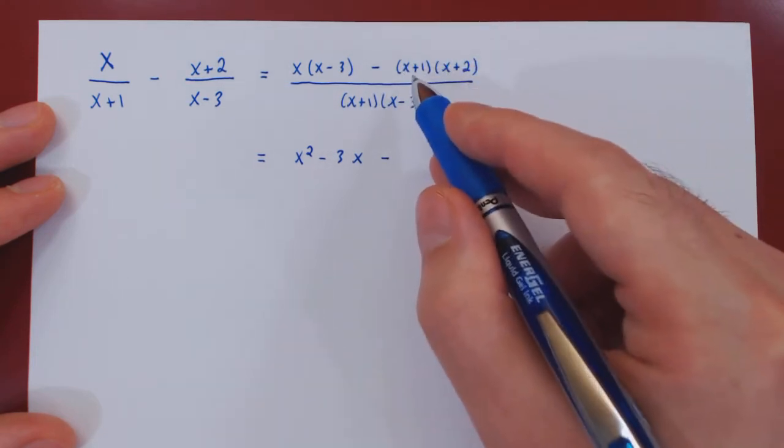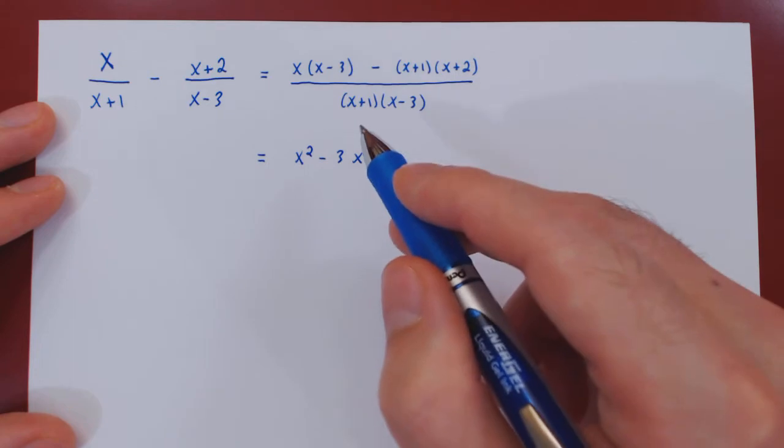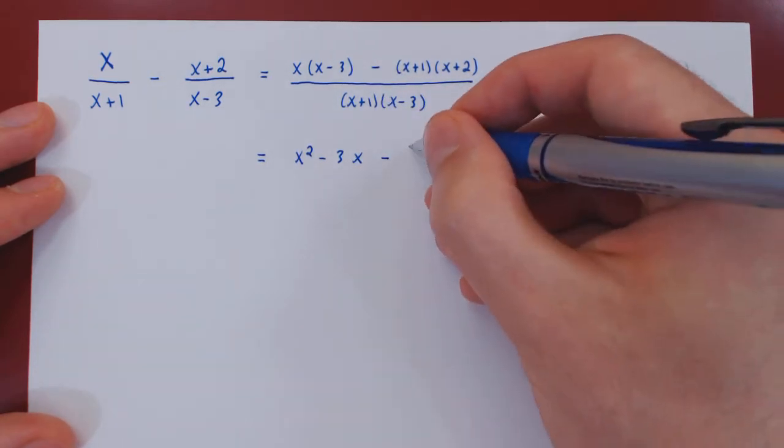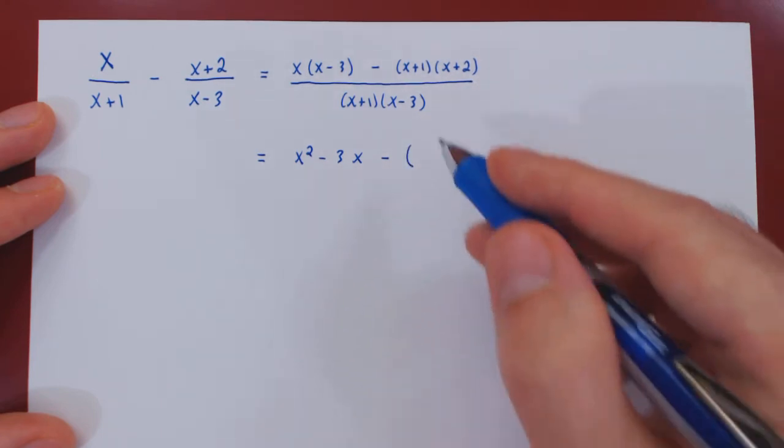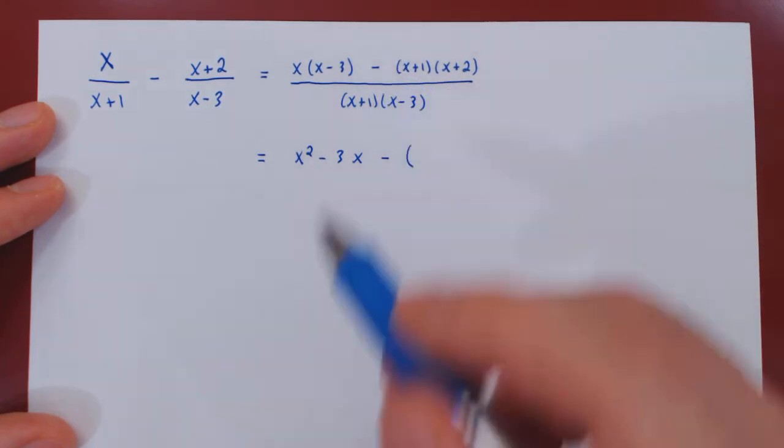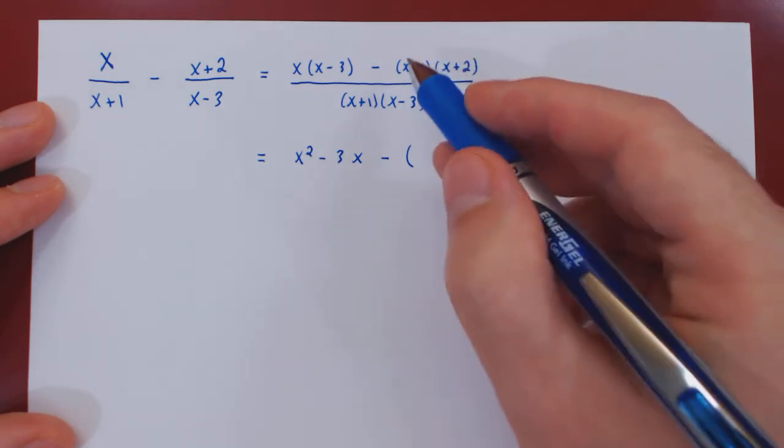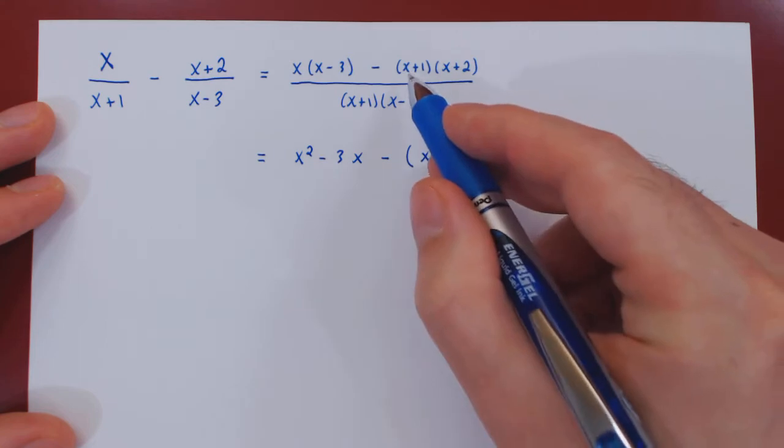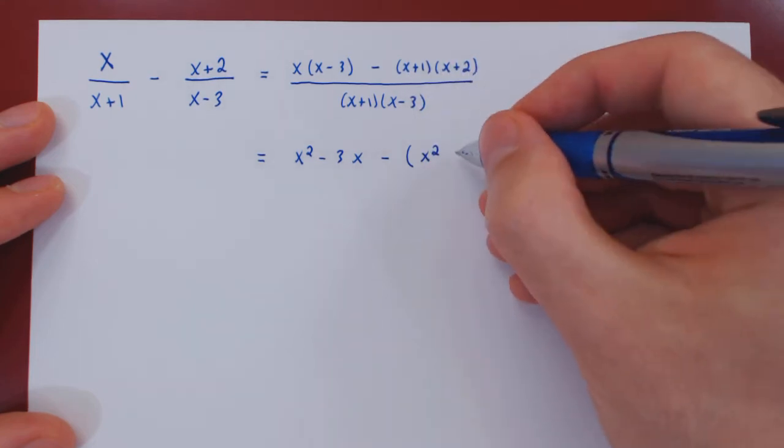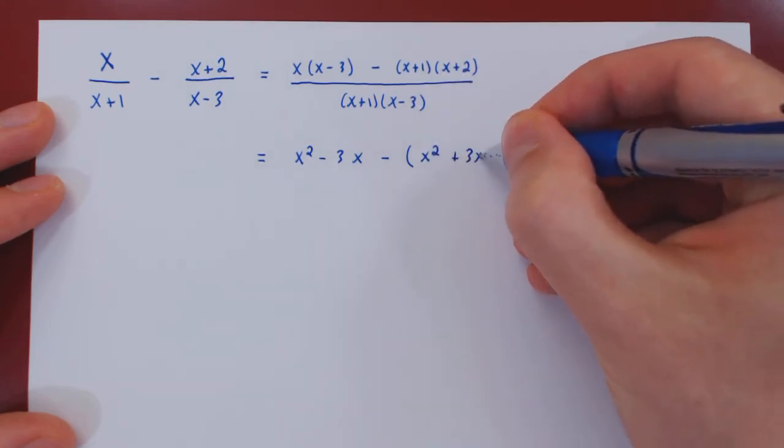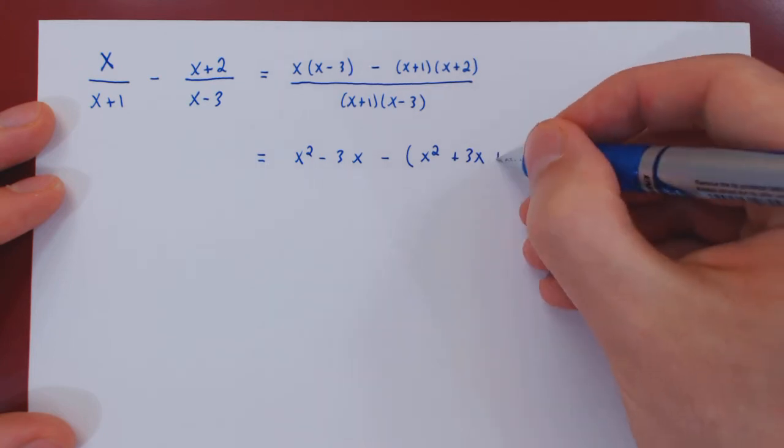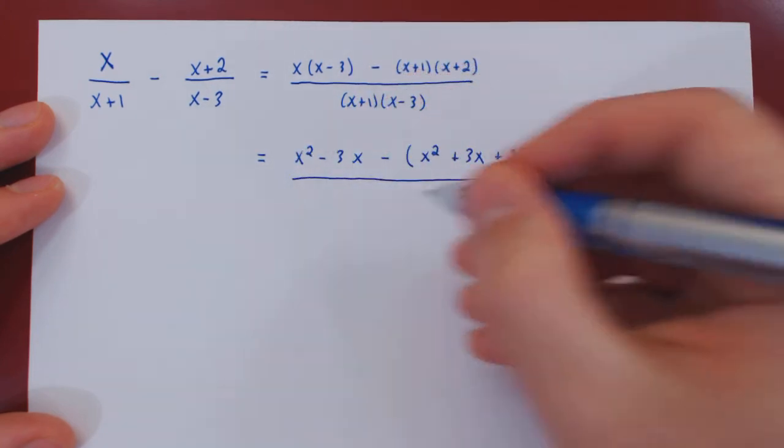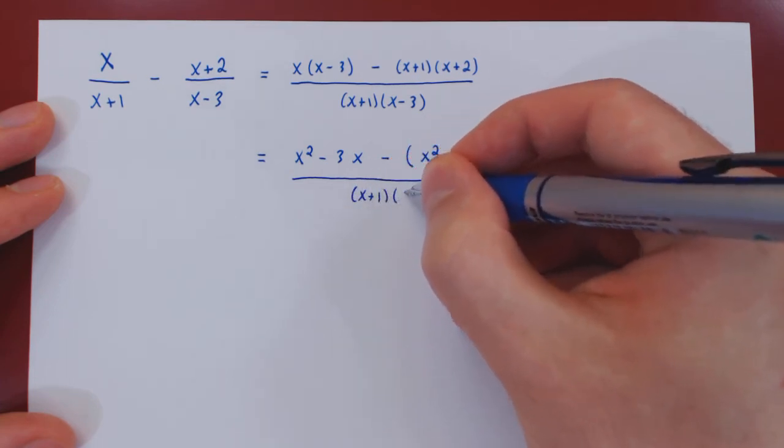So every term when you expand this product, you will get four terms and every one has to be negated. So here open up a pair of brackets, not to miss this important fact. Let's multiply out, so we'll get x squared, plus 2x plus x gives us plus 3x, and plus 2, over x plus 1 times x minus 3.